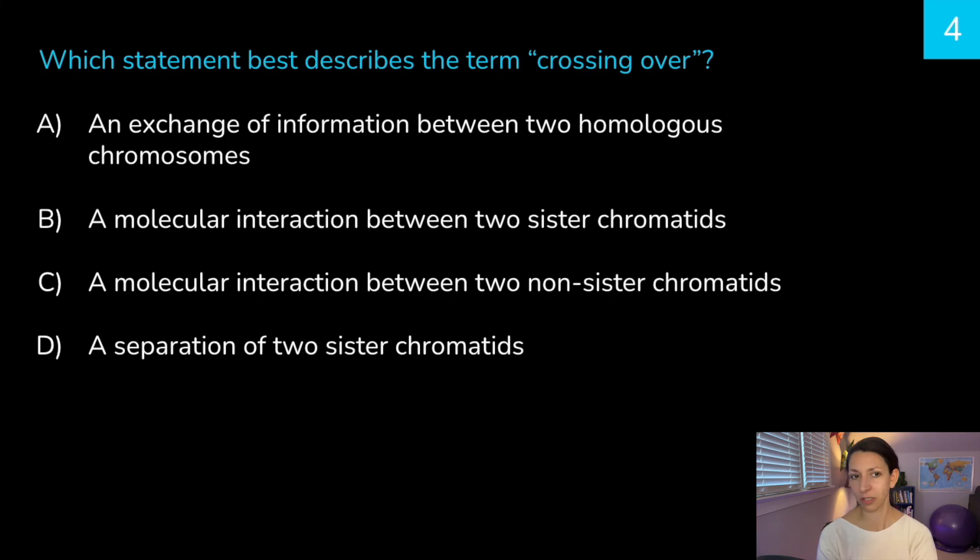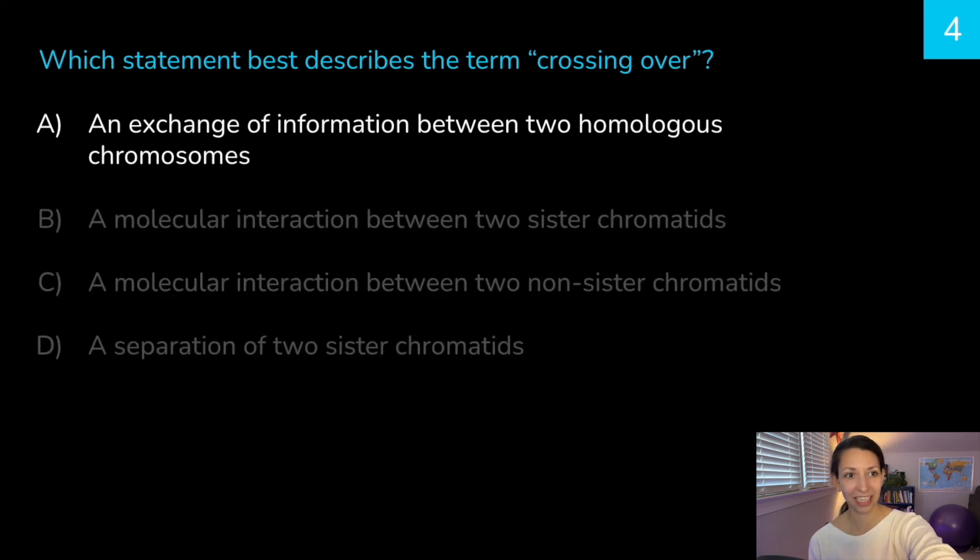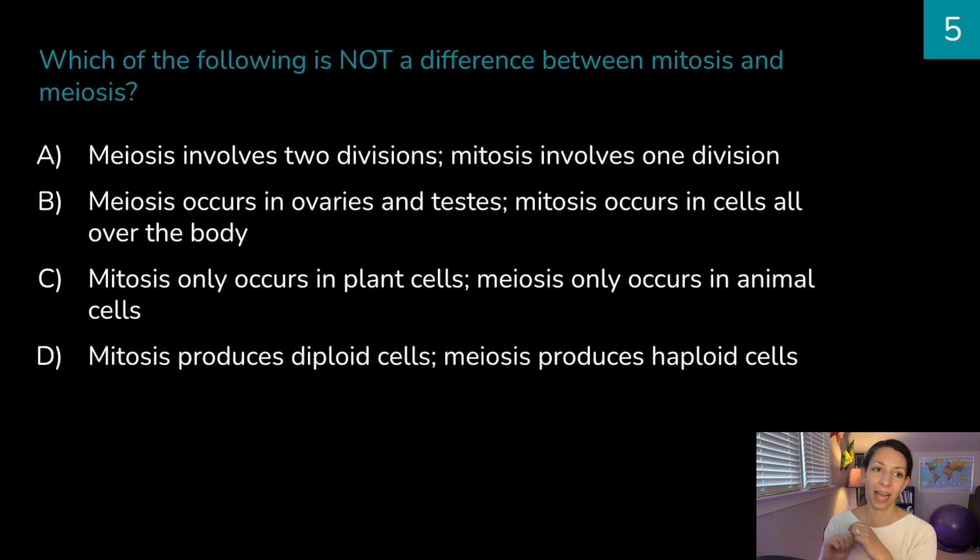All right, which best describes the term crossing over? An exchange of information between two homologous chromosomes. A molecular interaction between two sister chromatids. A molecular interaction between two non-sister chromatids. Or a separation of two sister chromatids. Think about it. Correct answer is A. An exchange of information between two homologous chromosomes. Remember, this happens during prophase I of meiosis, and sections of DNA are exchanged between paired homologous chromosomes, not between identical sister chromatids. Because they're the same, it wouldn't matter if we exchanged their information.